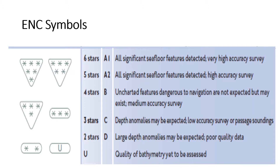When we go into the electronic navigation chart or ECDIS system today, because the charts we are currently using here for teaching purposes are private charts, the quality of bathymetry will most likely be reflected as the letter U. But if you are using approved electronic navigation charts as per IHO standard S-57, you will see that the quality of bathymetry will not always come across as U — you might get a six-star, five-star, four-star, three-star, or two-star rating.